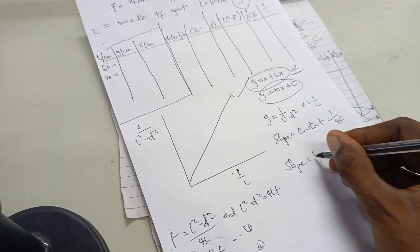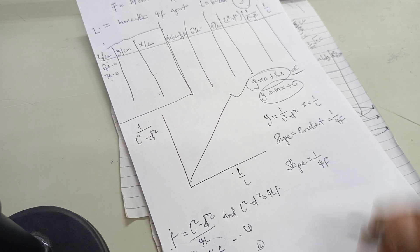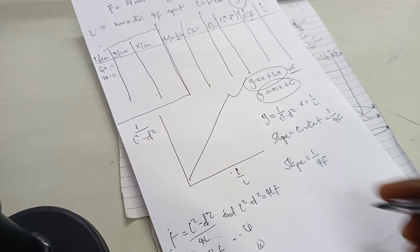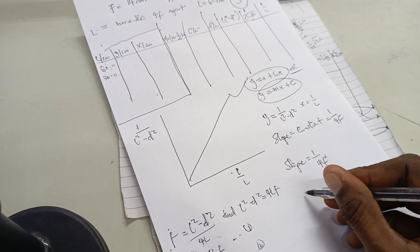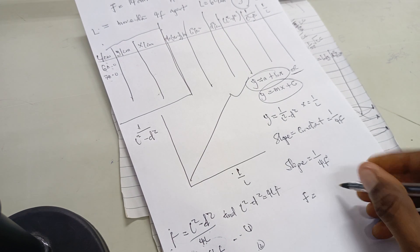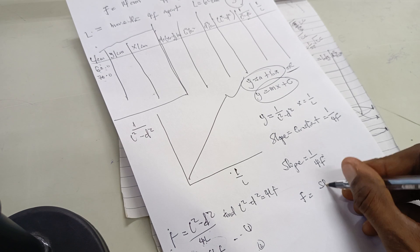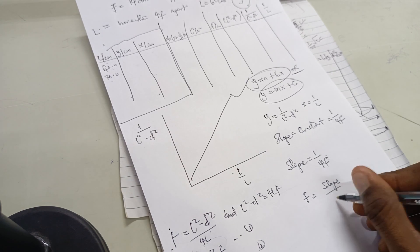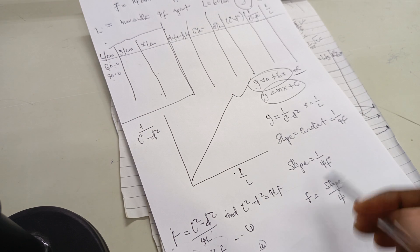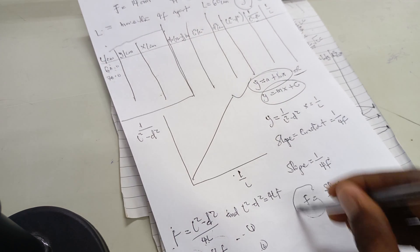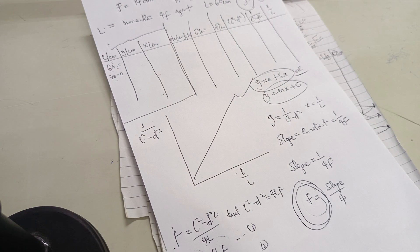We equate our slope to 1 over 4f, then make f the subject. Our focal length can be found as 1 over (4 times the slope). This is how you find the focal length of a converging lens using the displacement method.